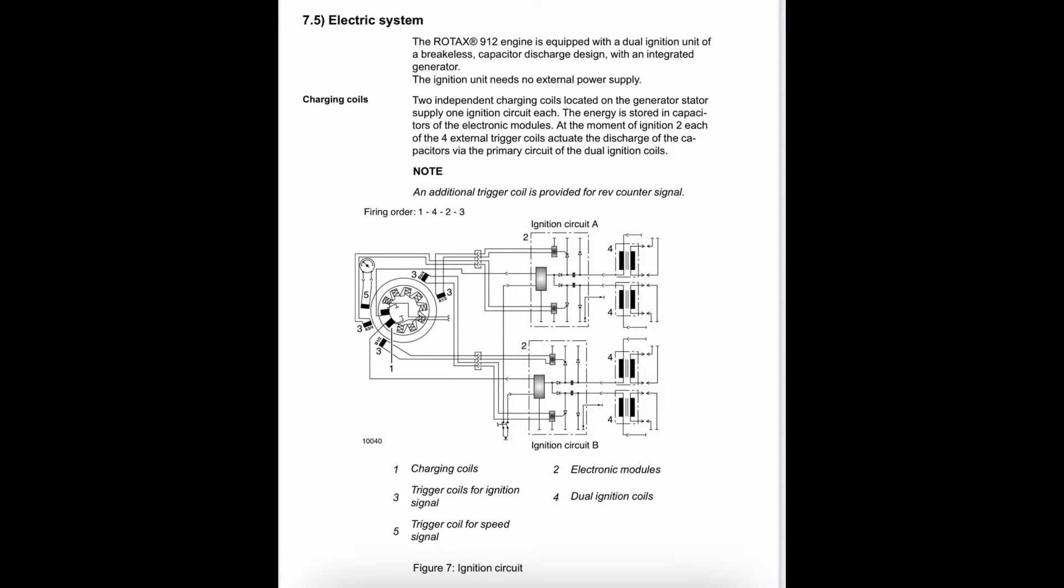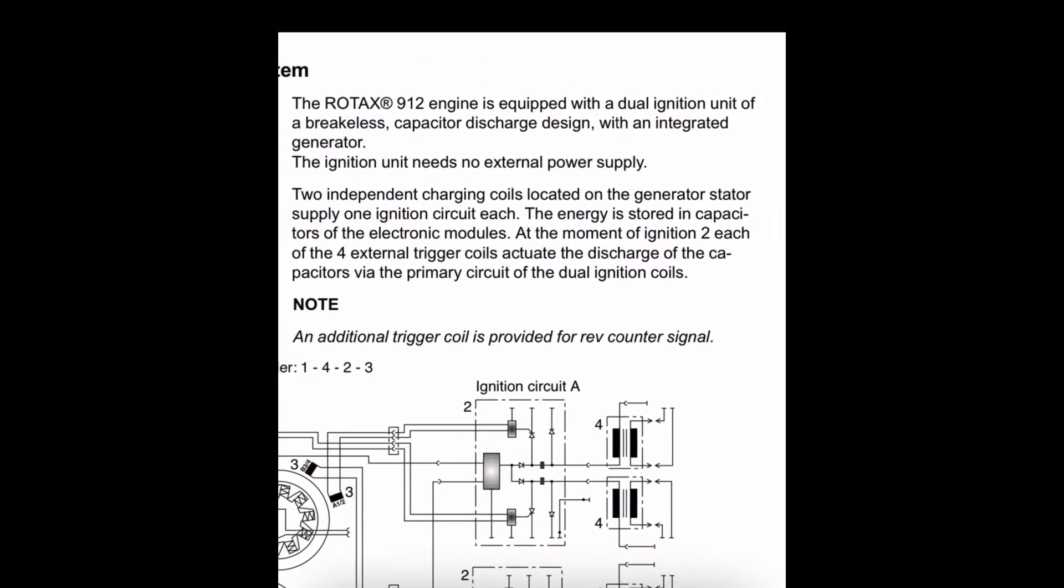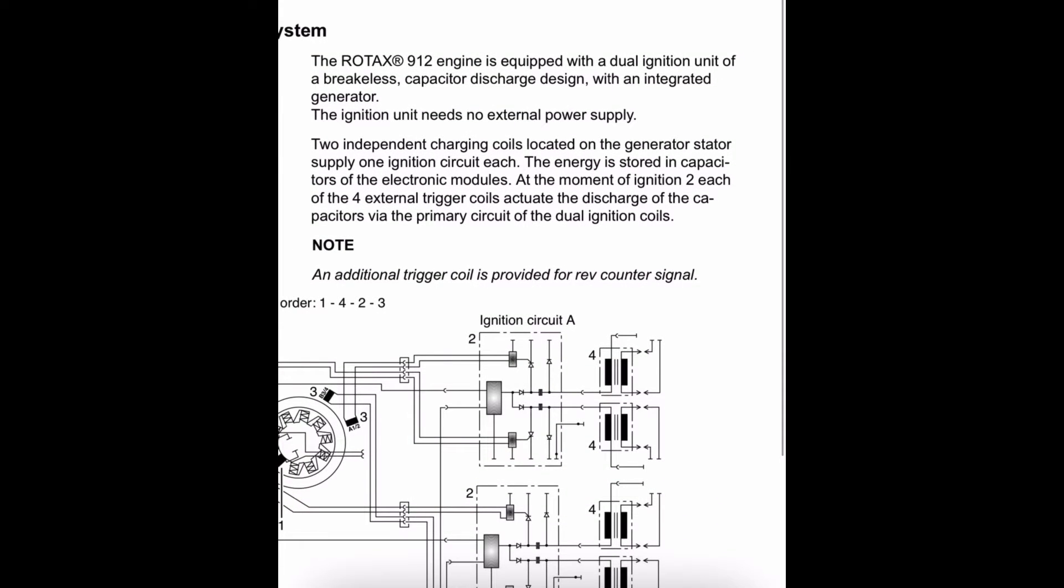A lot of sources will describe the ignition system as an electronic ignition system. I think we can more accurately describe it as a dual capacitor discharge ignition system, or DCDI for short. And that's exactly how Rotax describes their ignition.